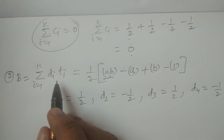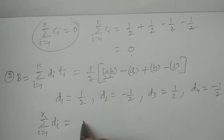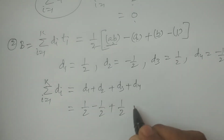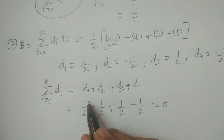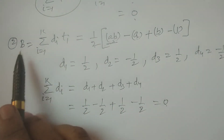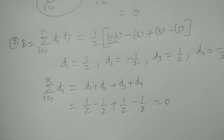To prove it is a contrast, we compute Σ Di = D1 + D2 + D3 + D4 = 1/2 - 1/2 + 1/2 - 1/2 = 0. Therefore, the main effect of B is also a contrast.